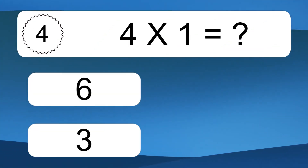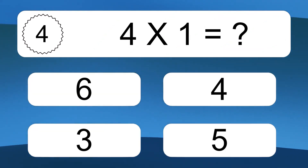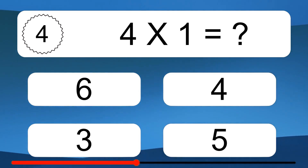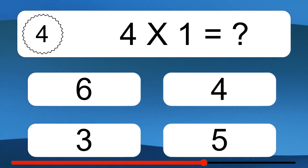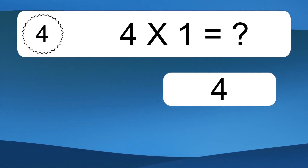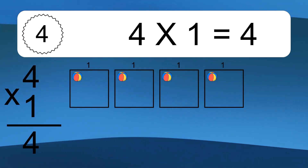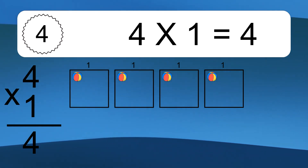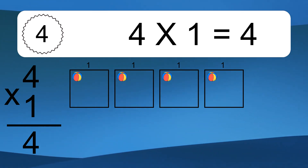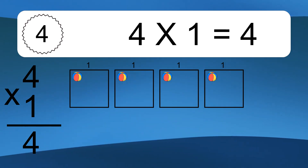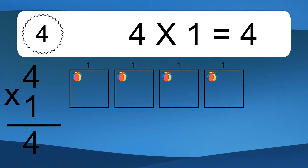4 times 1 equals what? 4 times 1 equals 4. We have 4 boxes, and each box has 1 colorful ball inside. If you count all the balls in all the boxes together, you will have 4 times 1 balls. This equals 4 balls.